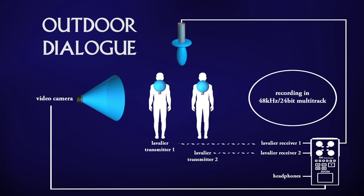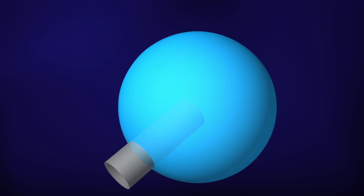A shotgun microphone when it's a wide shot and the actors are far away, and a super-cardioid when you can get closer to them. Don't forget to record an extra ambient track with one or two omni microphones. These recordings can be added later to the sound design if needed.